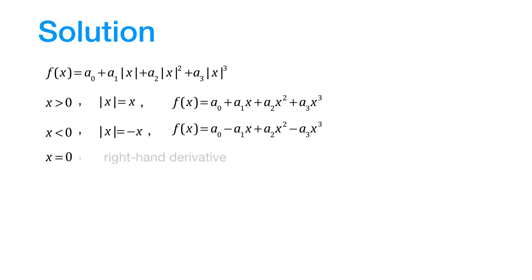So, to find the right-hand derivative, we differentiate the first line and we find that f dash x is given by this expression. Now, at 0, this first derivative would be equal to a1.